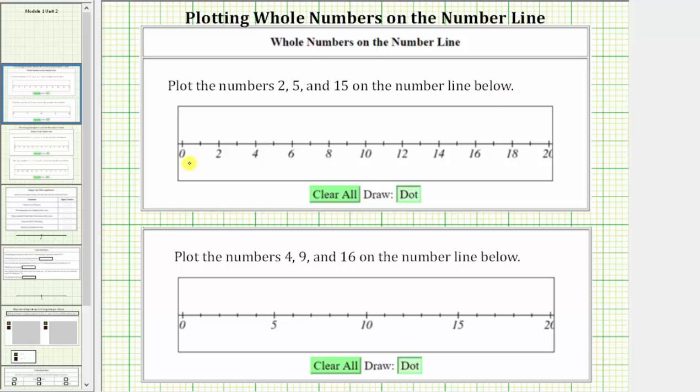Notice how the number line is labeled every two units. If we focus on the length from zero to two, this represents two units. But because this length is cut or divided into two equal parts or pieces by this tick mark, we know the length between tick marks is one unit.